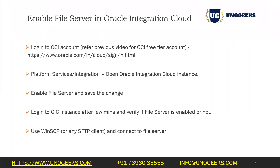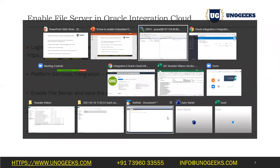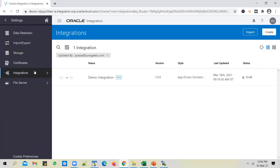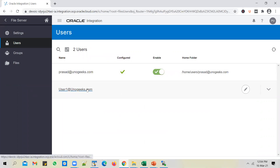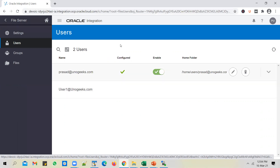So this is how you enable the file server in OIC. Starting from Generation 2, there is an embedded file server available by default but it will be disabled. You need to explicitly enable it by logging into the OCI dashboard, opening the OIC instance, enabling the file server, and waiting for the instance to restart — which takes close to 10 minutes. After that, verify the file server is enabled via the Settings option, and also explicitly enable the users who need to access the file server by going to File Server > Users.